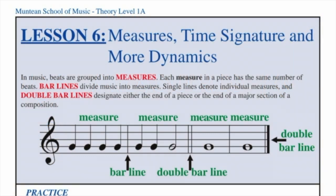In music, beats are grouped into measures. Each measure in a piece has the same number of beats. Bar lines divide music into measures.